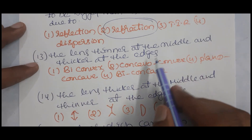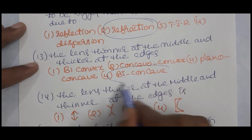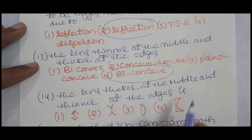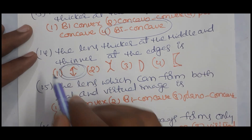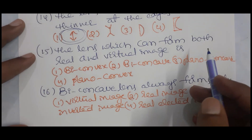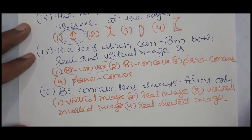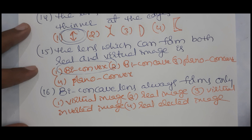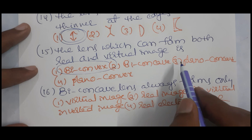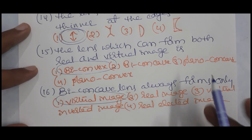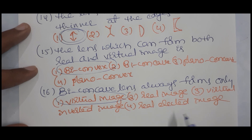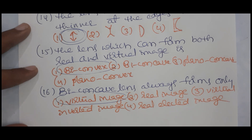A lens thinner at the middle and thicker at the edges is a concave lens. A lens thicker at the middle and thinner at the edges is a biconcave lens. The lens which can form both real and virtual images is a convex lens. A biconcave lens always forms a virtual image.